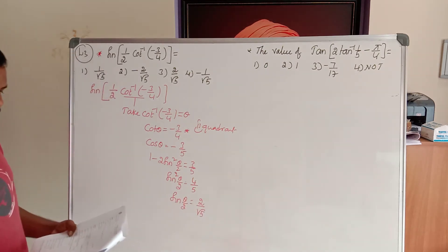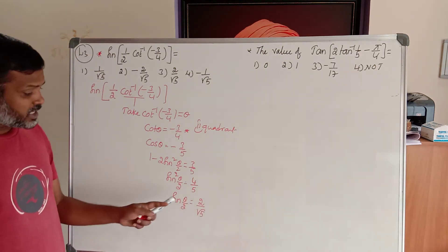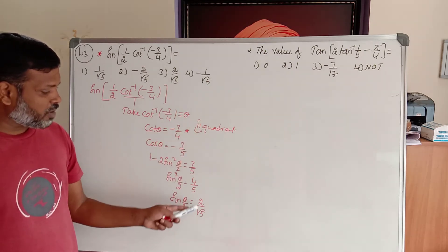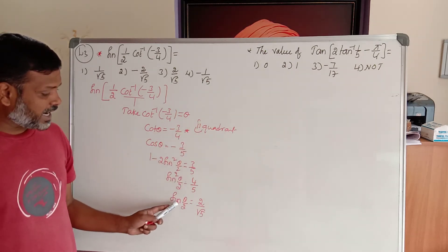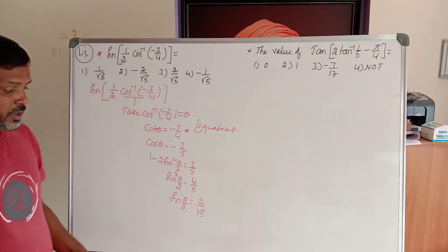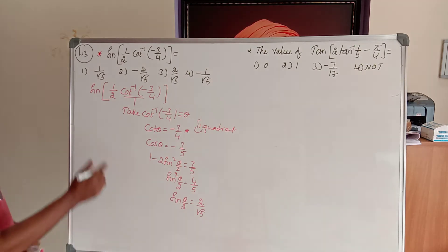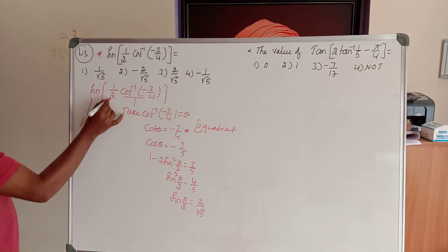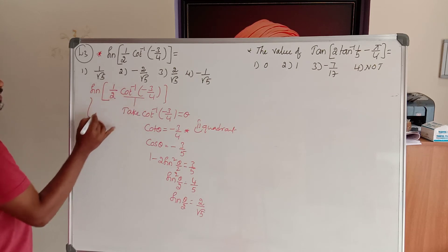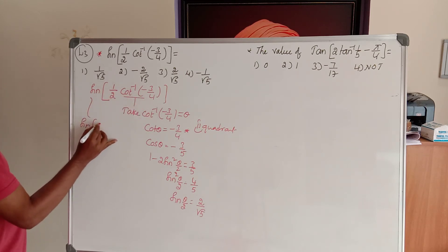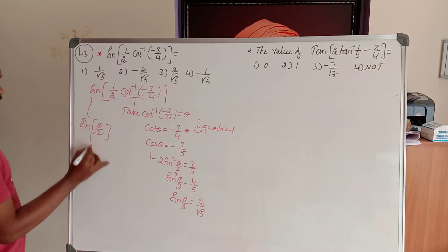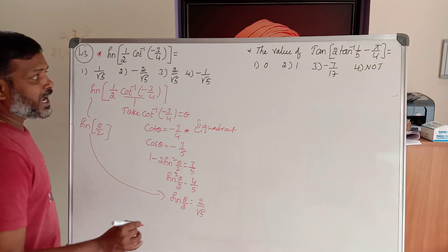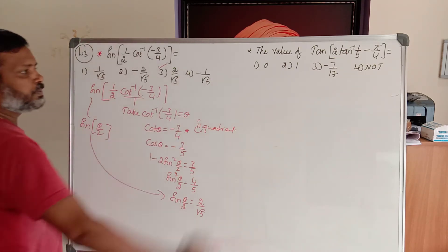Why is it plus 2 by root 5? Because it is defined in the second quadrant, and in the second quadrant, sine is always positive. Therefore, the given expression sine of (theta by 2) becomes 2 divided by root 5. This is the answer.